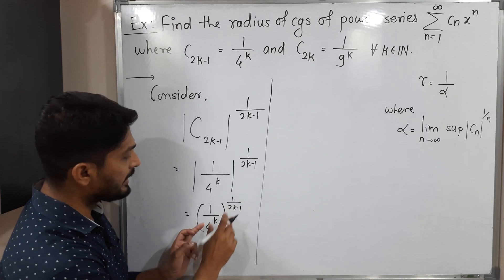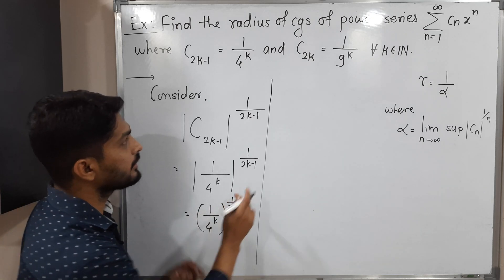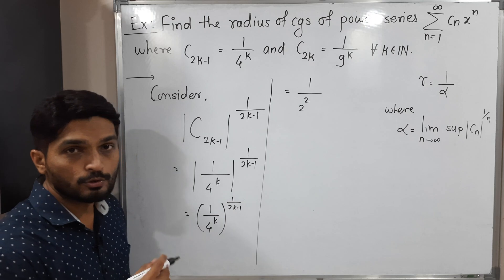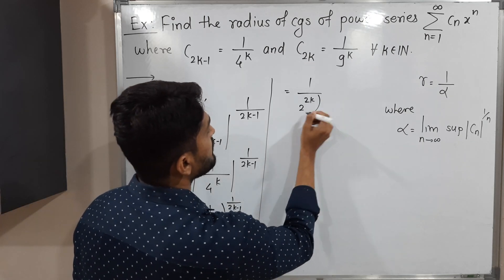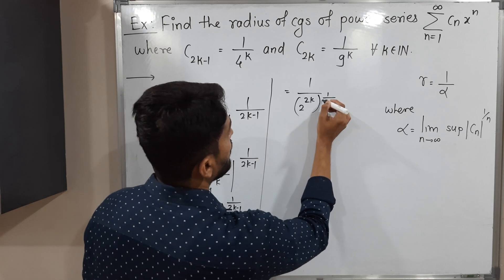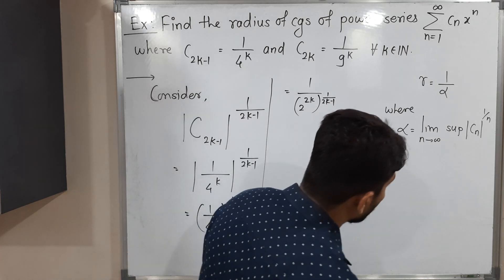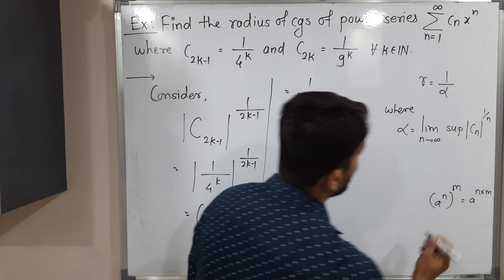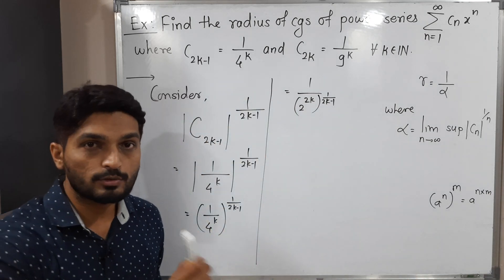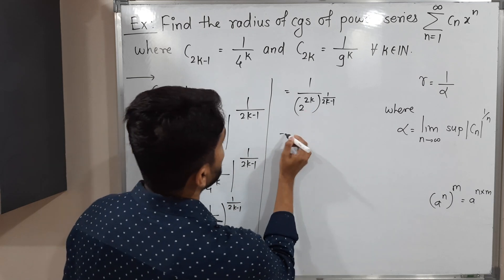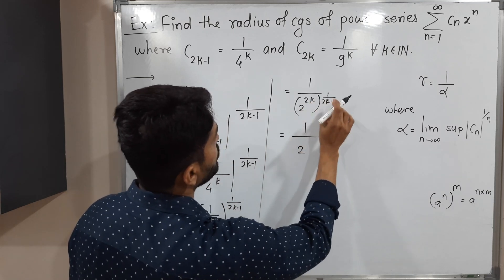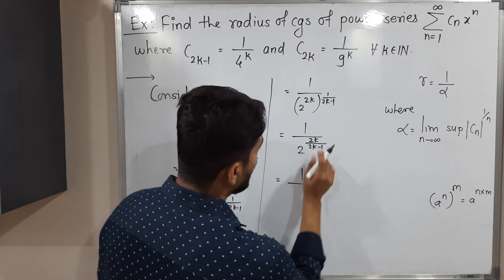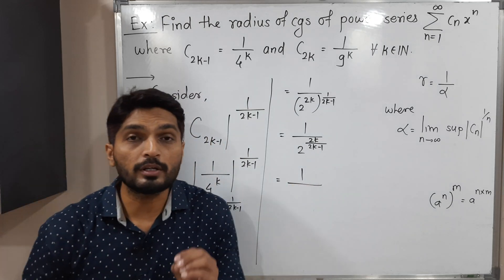Taking separate powers of numerator and denominator: 1 raised to anything is 1, and 4 = 2², so 4^k = 2^{2k}. Using the rule of indices (a^n)^m = a^{nm}, we get 1 / 2^{2k · (1/(2k-1))}, which simplifies to 1 / 2^{2k/(2k-1)}. The exponent 2k/(2k-1) looks complicated, so I will divide numerator and denominator by 2k.